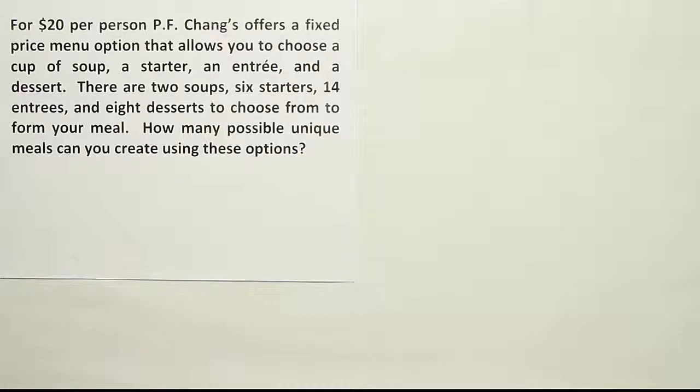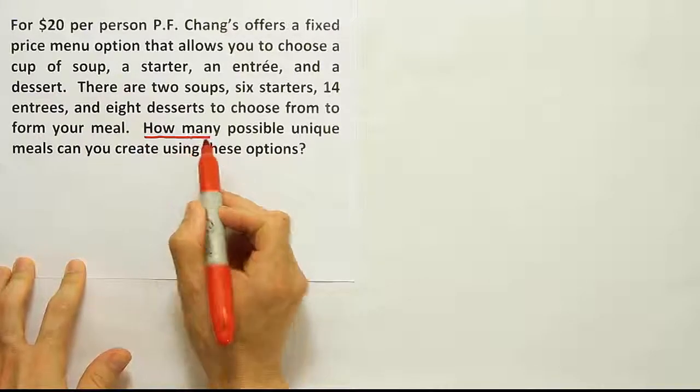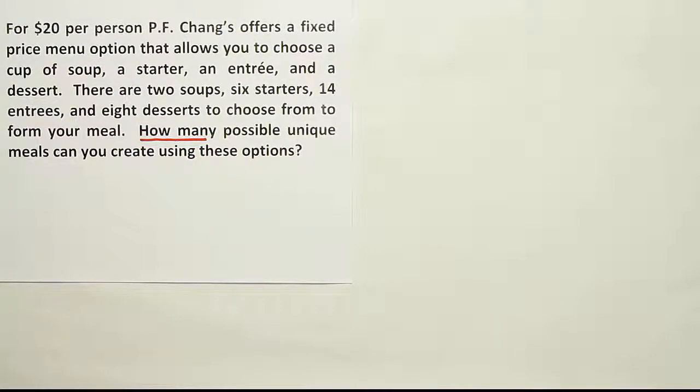The first thing we want to look at is the key phrases. Notice here that they ask us how many possible unique meals. It's a how many question. This is a counting question. They want to know how many possible combinations there are.